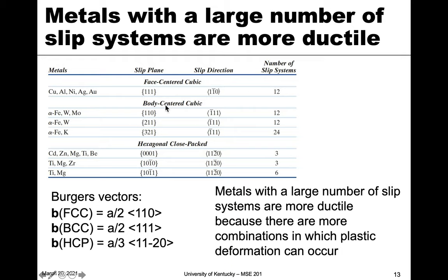Things get more complicated for BCC and HCP, where different metals can have different slip systems. For alpha iron, tungsten, and molybdenum, the slip plane tends to be {110} with a ⟨1̄11⟩ direction. You can also have {211} and {321} as possible planes with a similar direction — so the directions don't change, but you can have different slip planes.